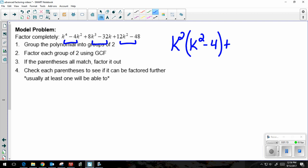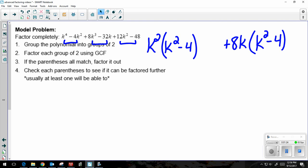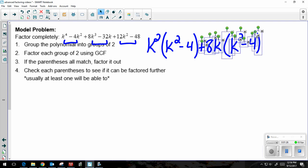So I can take out a positive 8k as a GCF and I'm left with k squared minus 4. And then if I take a look at the last two, I'm just going to move this over for a minute here. 12k squared minus 48, I can take out a positive 12 there.